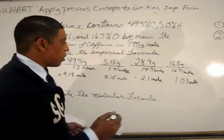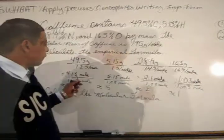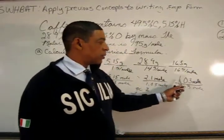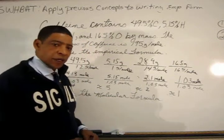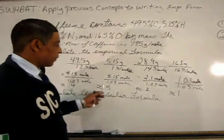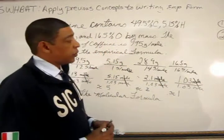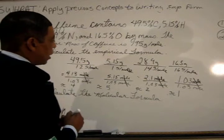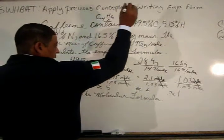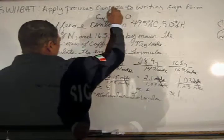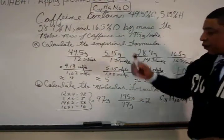The next step is to divide by the smallest mole value, which is 1.03. Dividing 4.13, 5.15, 2.1, and 1.03 by 1.03 — where the mole units cancel — generates the ratio 4 to 5 to 2 to 1. So the empirical formula for caffeine is C₄H₅N₂O.